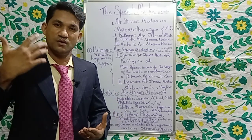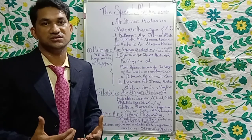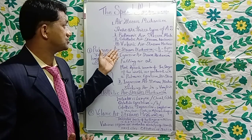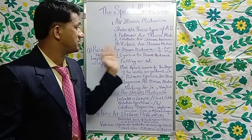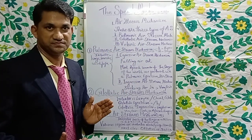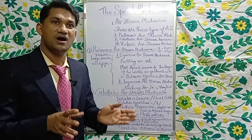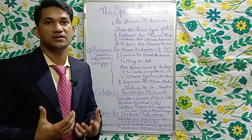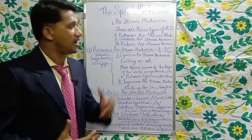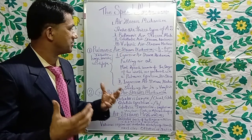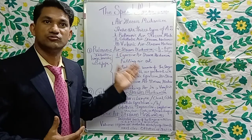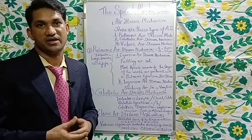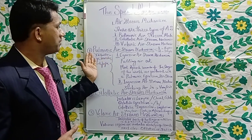Based on the organs of speech through which the air passes into and out of the human body, we have three types of air stream mechanisms: the pulmonic air stream mechanism, the glottalic air stream mechanism, and the velaric air stream mechanism. The terms pulmonic, glottalic, and velaric come from the specific organ of speech or muscles of the human body involved in the production of speech sounds or the passage of air. We will now discuss each of the three air stream mechanisms in detail, beginning with the pulmonic air stream mechanism.